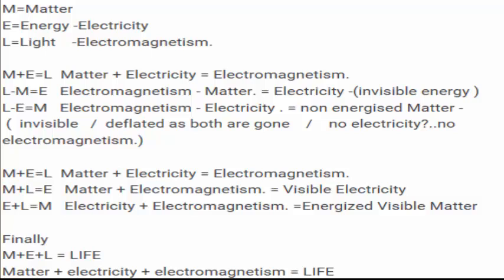Down at the bottom here, M plus E equals L. Matter plus electricity equals electromagnetism again. Then we'll go with the pluses here. M plus L equals E. Matter plus electromagnetism equals visible electricity.